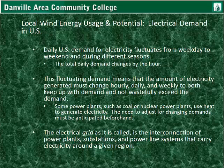Some power plants like coal and nuclear plants use heat, so they have to adjust ahead of time for the changing demand. The electrical grid, as it's called, is the interconnection of power plants, substations, and power line systems that carry electricity around an area.